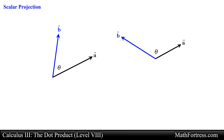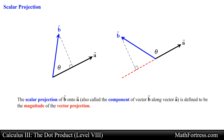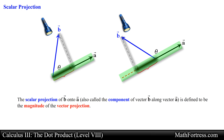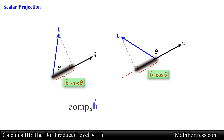Given two vectors a and b with the same initial point, and theta representing the angle between vector a and vector b, the scalar projection of b onto a — also called the component of vector b along vector a — is defined to be the magnitude of the vector projection. You can think of it as the length of the shadow cast when you shine light in the direction perpendicular to the line parallel to vector a. Using right triangle trigonometry, the scalar projection equals the magnitude of vector b times cosine of theta. We mathematically denote this length as the component of b along a.